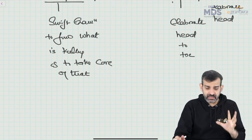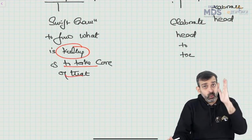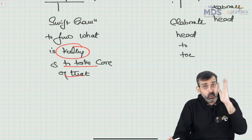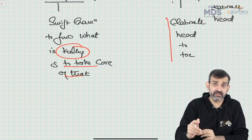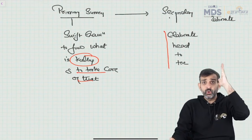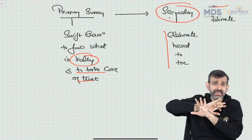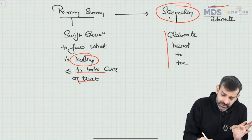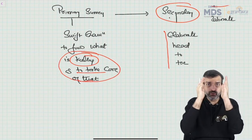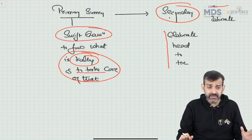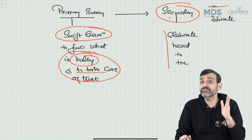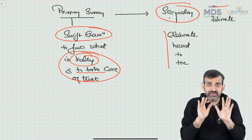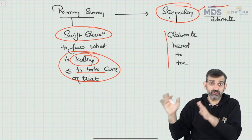The ATLS guideline says conduct a primary survey first, find out what is killing, and take care of that. Only then proceed to secondary survey. The secondary survey can wait till eternity until you have taken care of what is killing. So in any trauma patient, conduct a swift examination immediately, and if there is anything that can kill the patient immediately, take care of that first before doing a detailed head-to-toe examination.